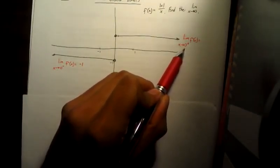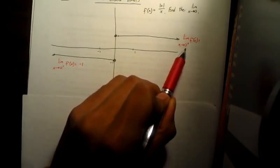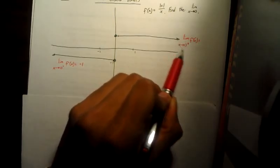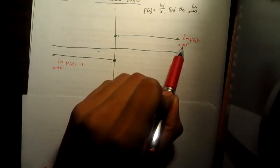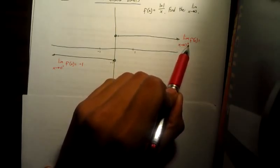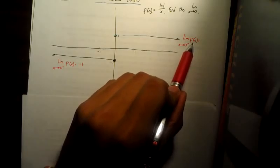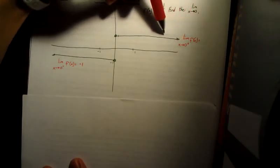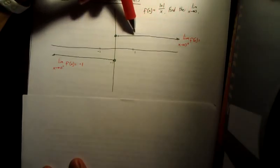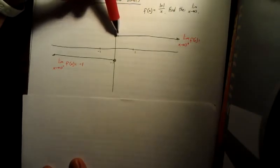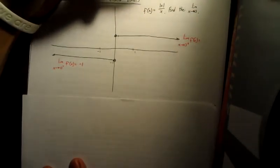Likewise, this notation is saying the limit as x approaches zero from the positive of f of x. So, what value is the function approaching as you get closer and closer to x equals zero from the positive side — from the right side? And that equals one.